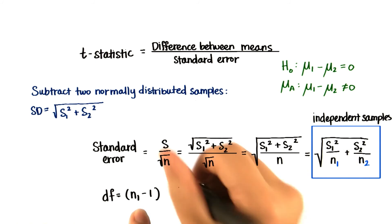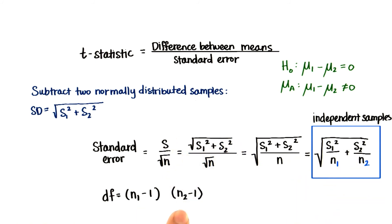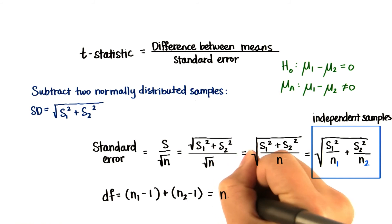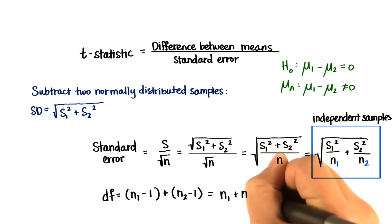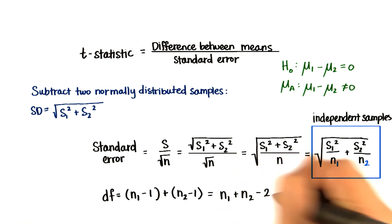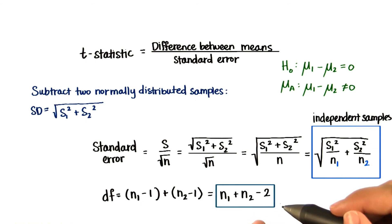Subtract one from n1, subtract one from n2, add them. And that's the same as adding the sample sizes, and then subtracting two. And here's the degrees of freedom we'll use for the rest of this lesson.